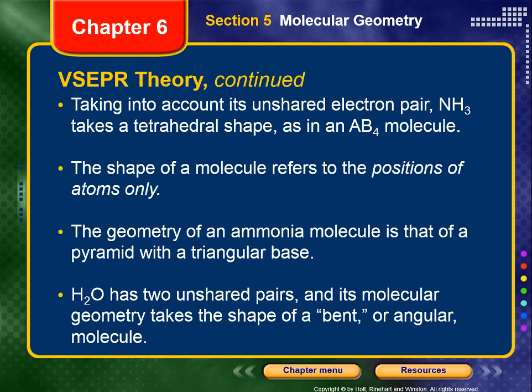The shape of a molecule refers to the positions of atoms only. If I say shape, I'm asking how the atoms arrange themselves. If I ask for geometry, I am asking you to take into account the lone pairs of electrons — not just the atoms, but the atoms plus the lone pairs of electrons. So H2O has two unshared pairs of electrons. Its shape is bent; its geometry is tetrahedral.